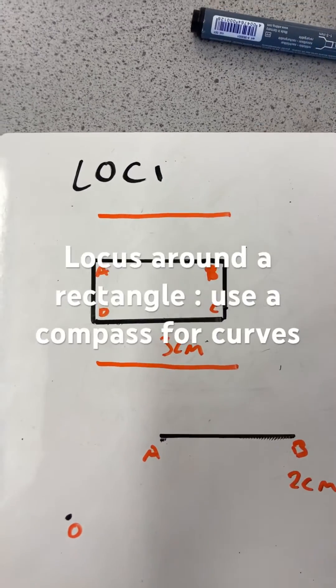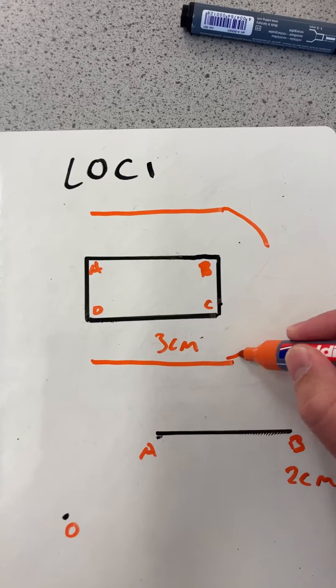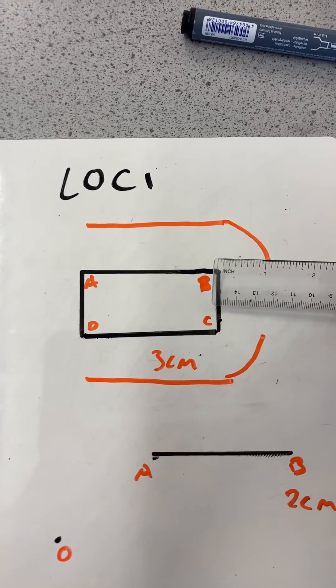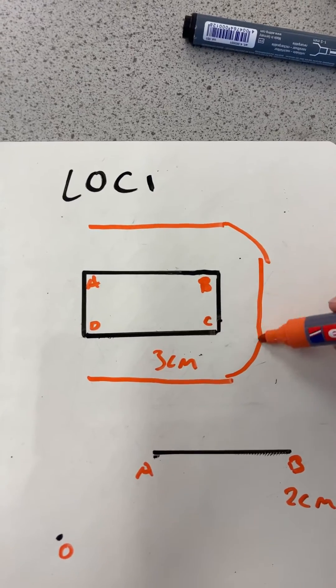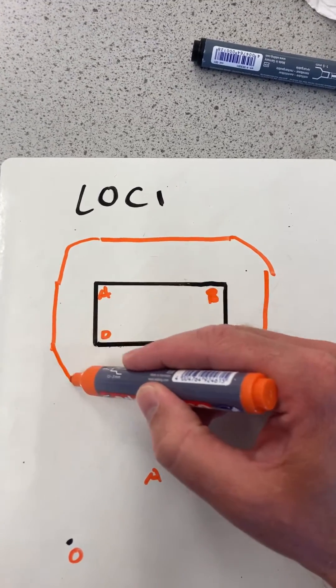We'd then need to use a compass to make the curved corners there and there and then again measure out three centimeters there and use a straight line there. So you'd end up with an oblong like that.